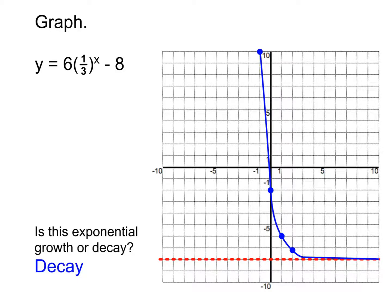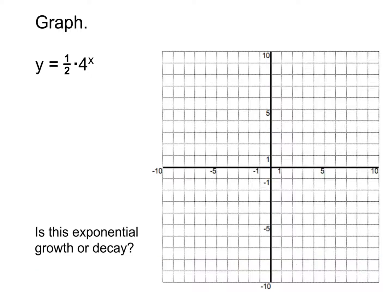We're going to do one more graph here together as a group. So then, last one, I'd like you to please graph this: y equals 1 half times 4 to the x. And again, start by thinking about what's the parent function, what are the transformations, where is the asymptote, and then start making your graph from there.